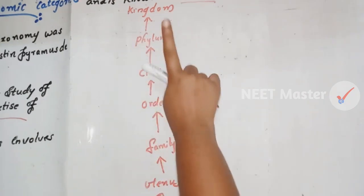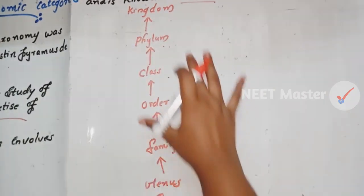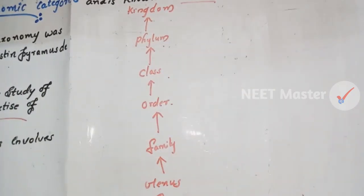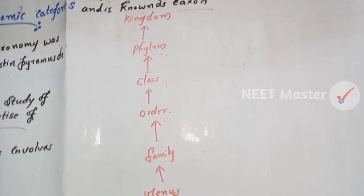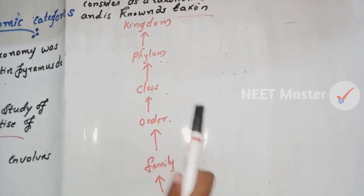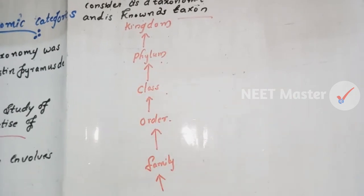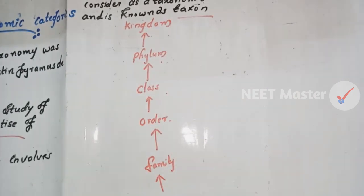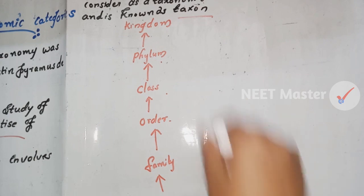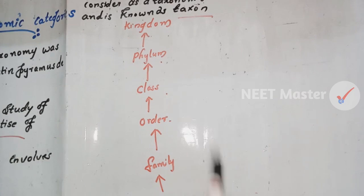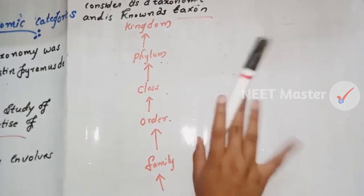The highest level is Kingdom. Kingdom is the broadest category — for example, Animalia, which means all animals. Then we find the Phylum. We have one phylum in this example.